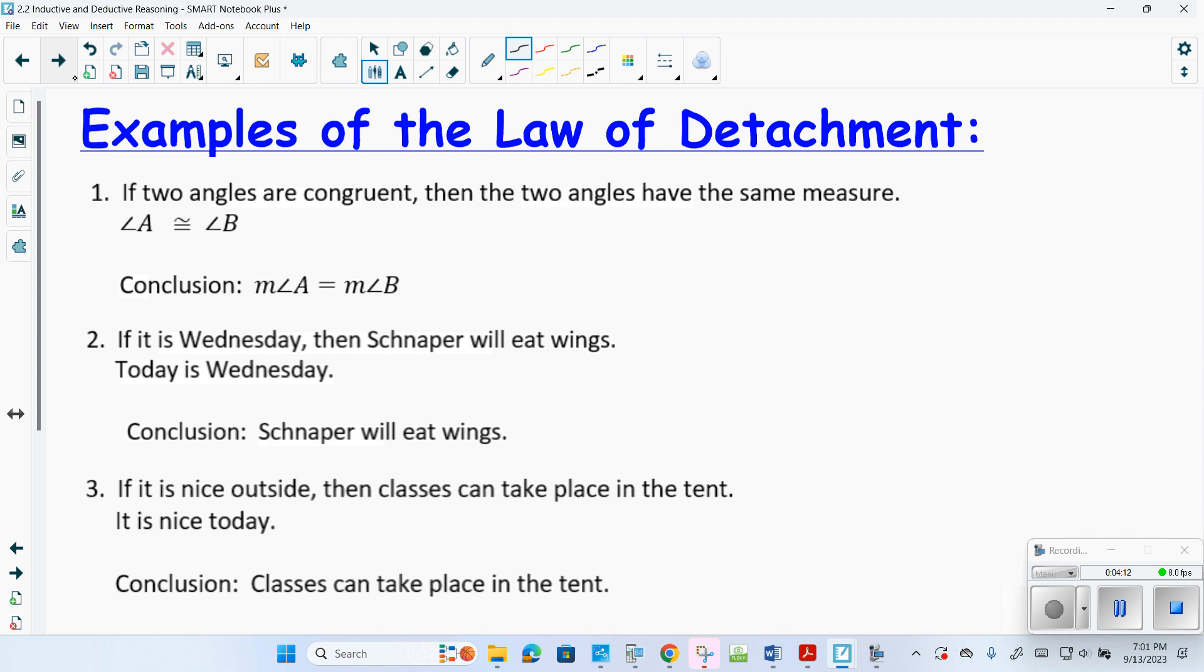Here we go. This is an example. If two angles are congruent, then two angles have the same measure. Angle A is congruent to angle B. I then can conclude that the measure of angle A equals the measure of angle B. For more general questions: if it's Wednesday, then Ms. Schnapper will eat wings. Today is Wednesday. I then can conclude that Ms. Schnapper is eating wings. If it's nice outside, then classes can take place in a tent. It is nice outside, therefore I can conclude that classes can take place in a tent.